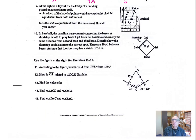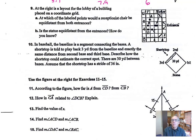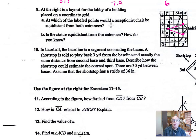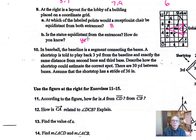Let's look at number 9. I'm taking this as referring to the entrances to a building, and it's asking at which of the labeled points a receptionist chair would be equidistant from both entrances. We're looking for an isosceles triangle type pattern, so B would give us an isosceles triangle. B would be the position for the receptionist chair to be equidistant from both entrances. Is the statue equidistant from the entrances? If we connect it we do get an isosceles triangle, so yes, the statue is also equidistant — it has to do with isosceles triangles and congruent legs.